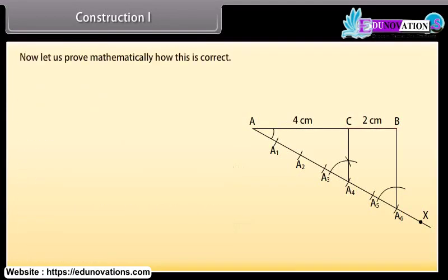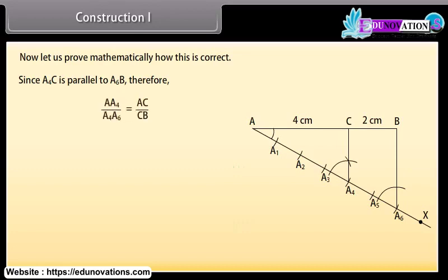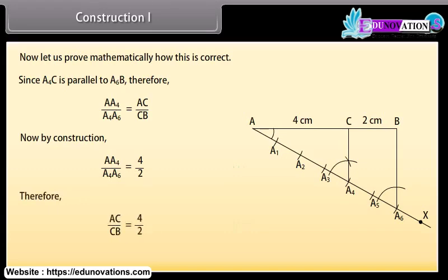Now let us prove mathematically how this is correct. Since A4C is parallel to A6B, therefore by the basic proportionality theorem, AA4 upon A4A6 equals AC upon CB. Now by construction, AA4 upon A4A6 equals 4 upon 2. Therefore AC upon CB is equal to 4 upon 2. This shows that C divides AB in the ratio 4 is to 2.